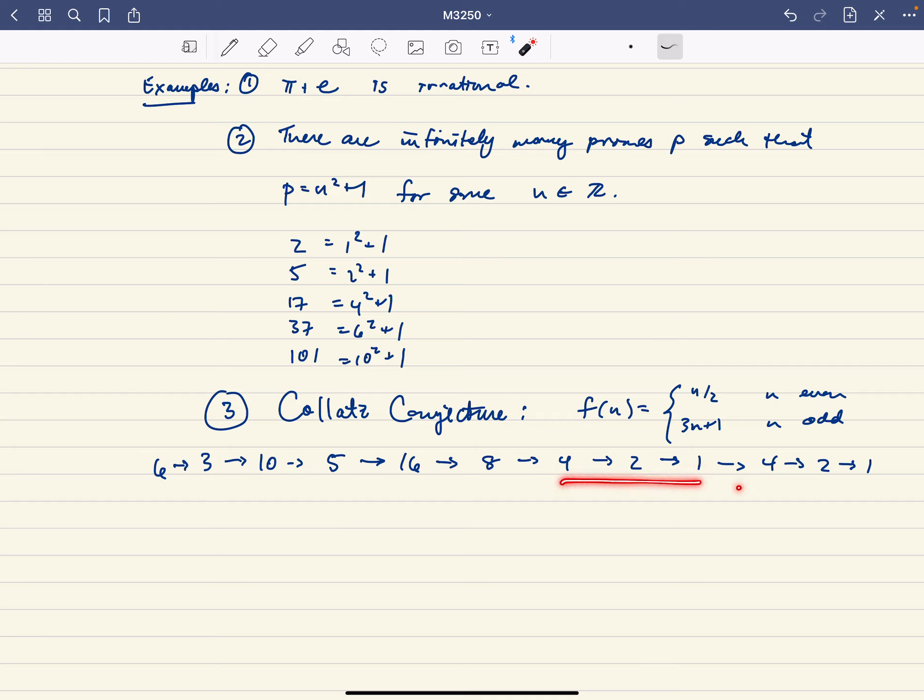And then this cycle repeats infinitely often. The conjecture is exactly that, that no matter what positive integer you start with, you will eventually get down to this number 1 here. So that's the conjecture.